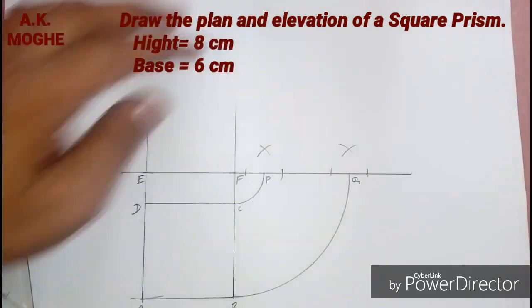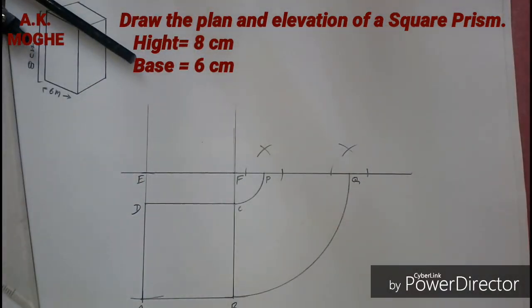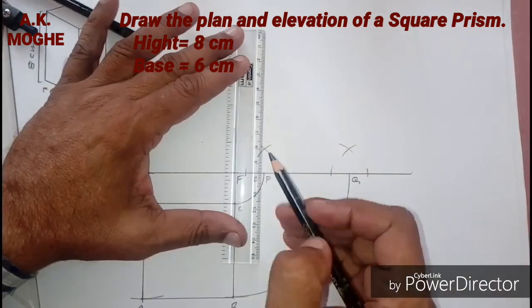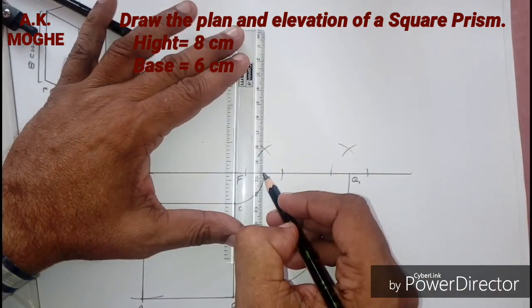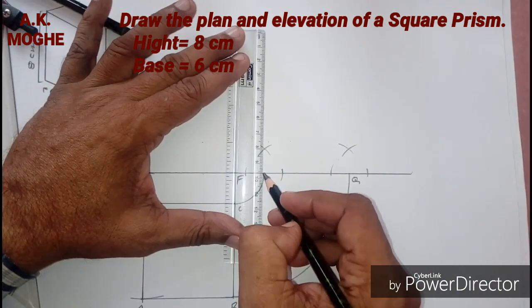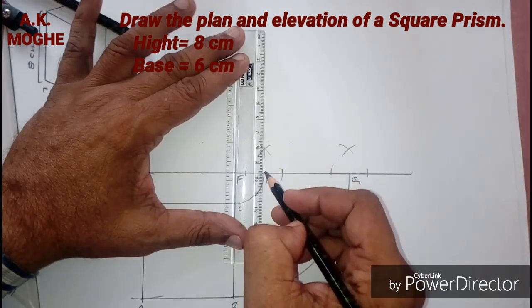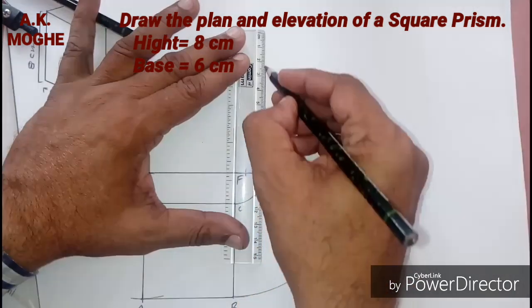Here we are drawing the side view first, then top view, then front view. We can draw in any way. That is first front view, then top view, then side view, or top view, front view, side view. It can be drawn anyway.